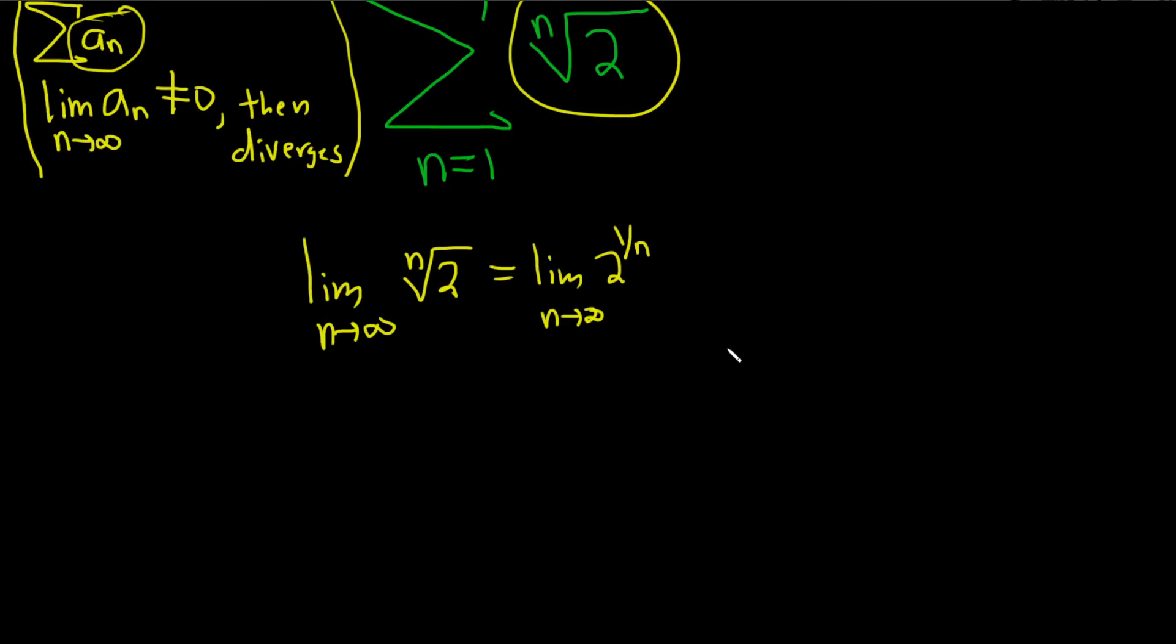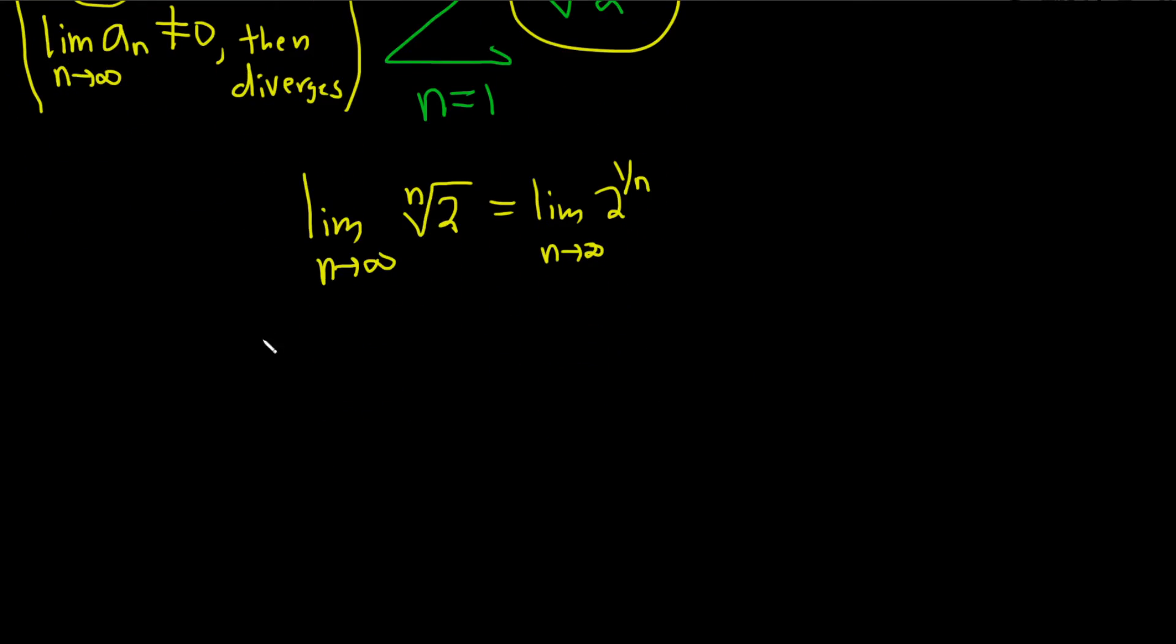So to take this limit properly, what we can do is we can use logarithms. So I'm going to let y be equal to 2 to the 1 over n. And now we're going to take the natural log of both sides. This is just a technique, so ln of y equals ln of 2 to the 1 over n. So if you're wondering how I knew to do this, it's just because probably by the time you're doing a problem like this, you've seen this limit before.